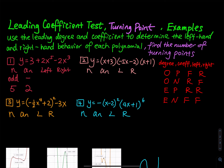Then which one should I choose? Positive — I will use P for positive. So take a look at these 16 letters: leading degree is odd, leading coefficient is positive, then it falls to the left and rises to the right. It is just that easy.